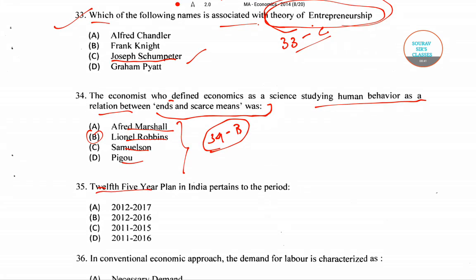Question number 35: the 12th Five-Year Plan in India covered which period? The answer is 2012 to 2017, so option A is the right answer.